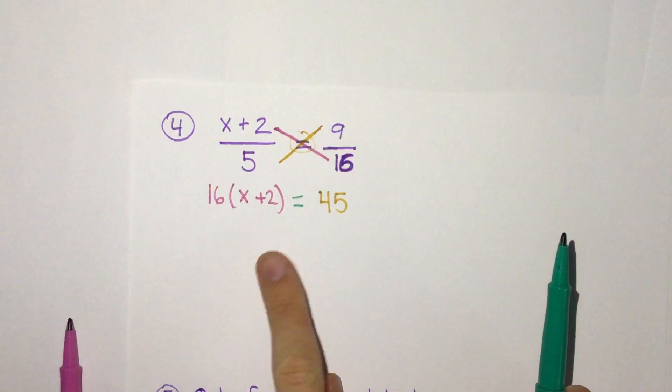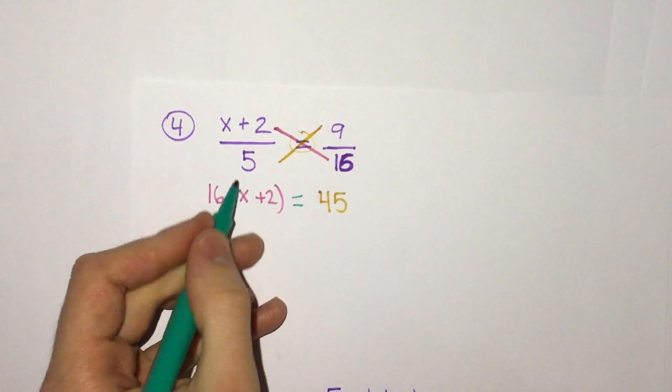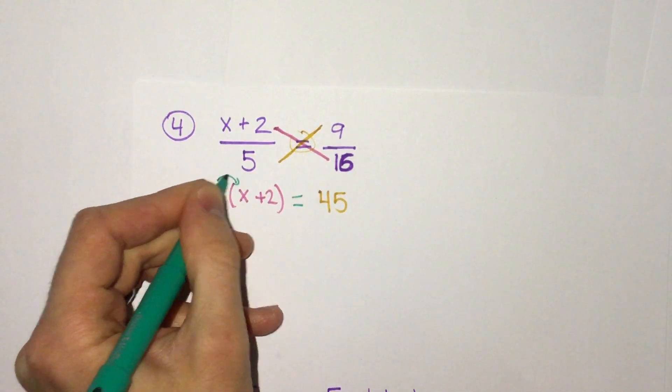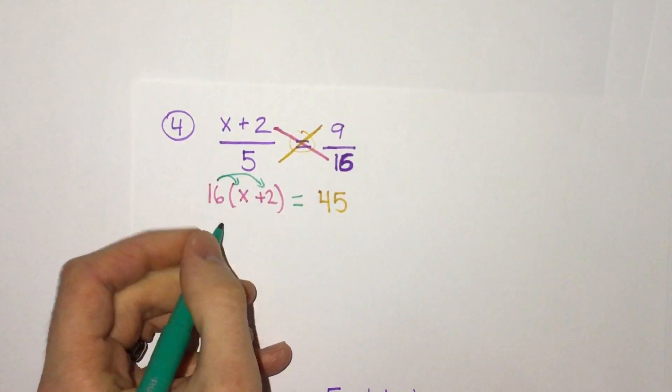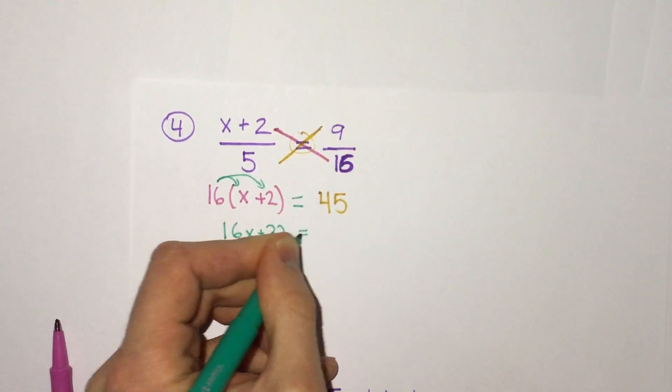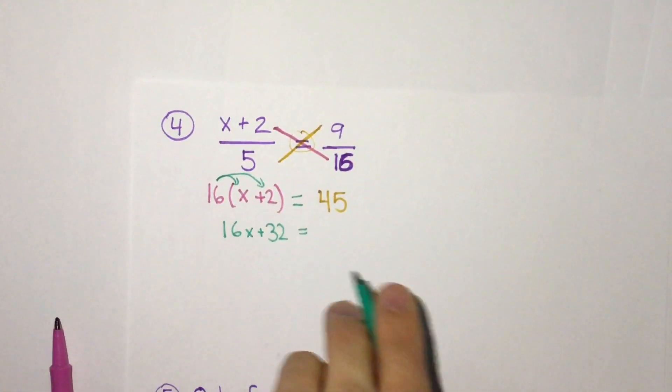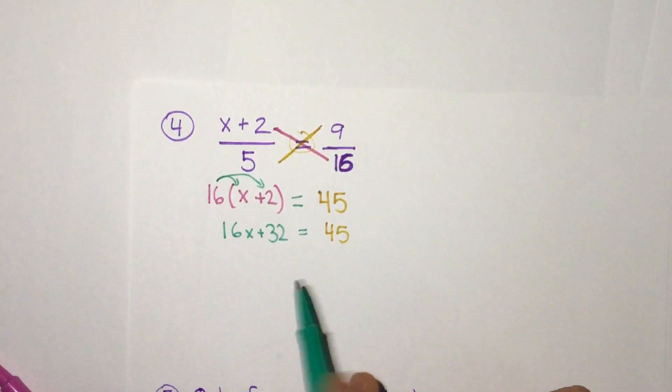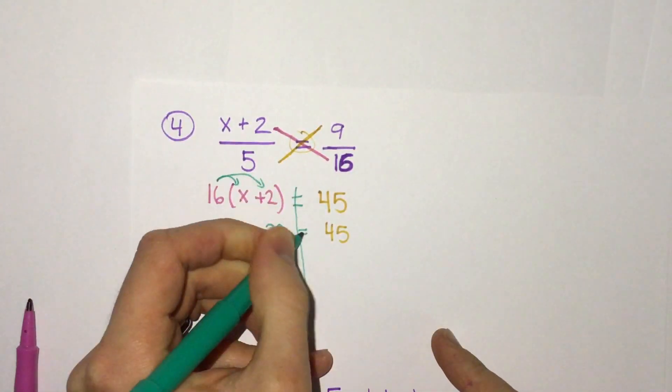So if we do that, then remember, we need to use the distributive property. So 16 times x, 16 times 2, we get 16x plus 32 equals 45. And then now we have an equation that, like normal, we can solve for x.